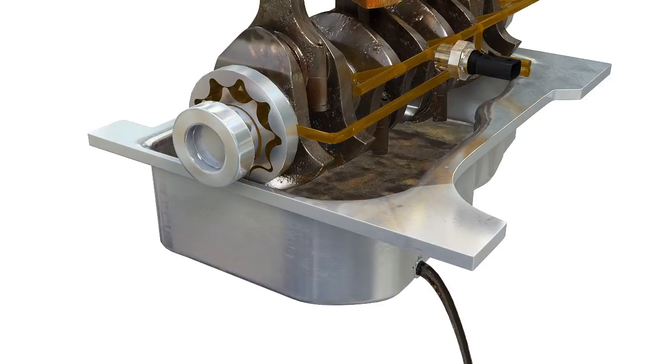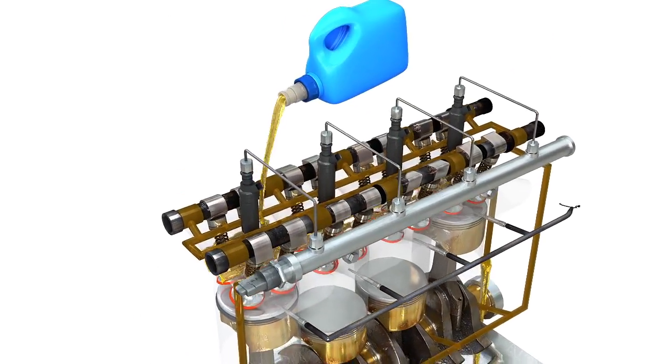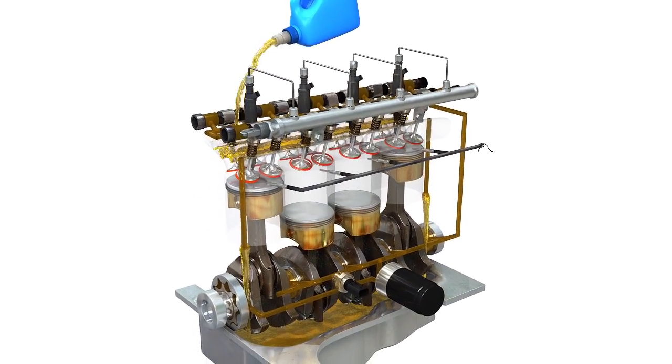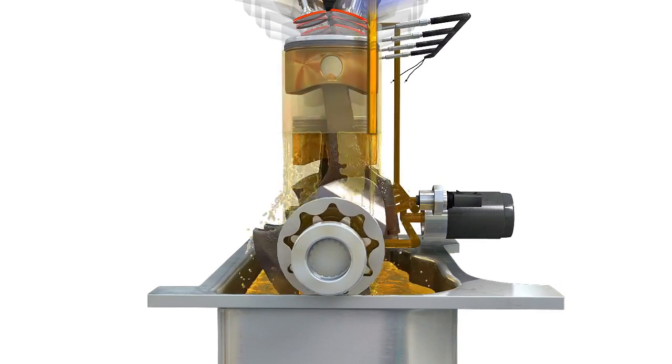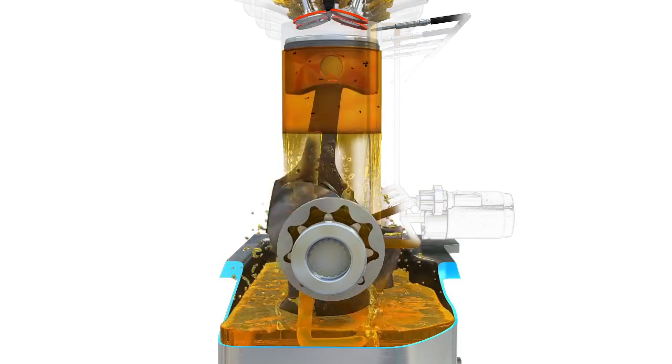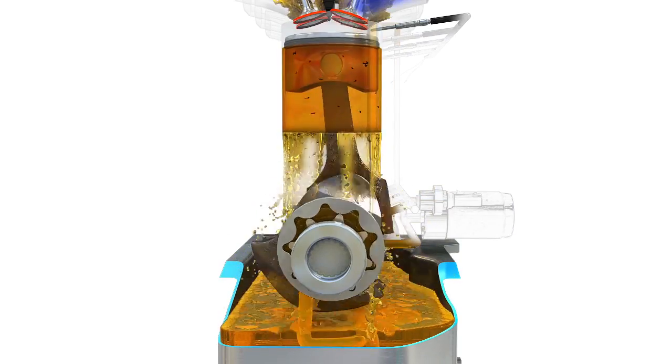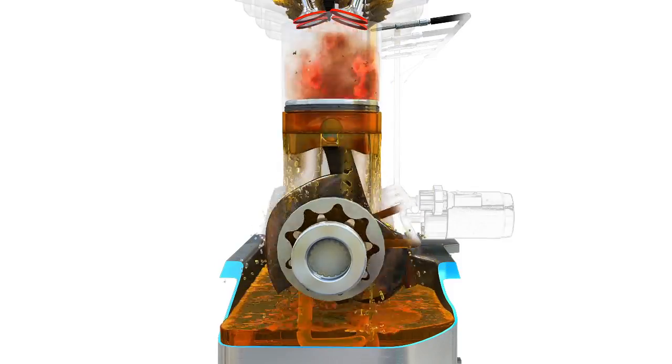When we drain your oil as part of a routine service, some of it will remain on the surface of the engine components. Newly replaced oil becomes dark very quickly as the soot particles in the residual oil mix with the new oil.